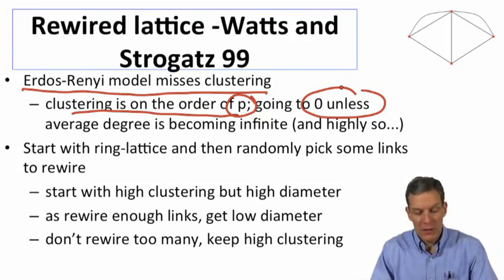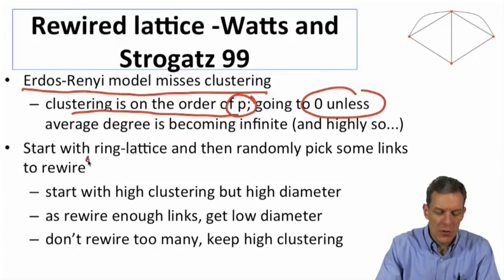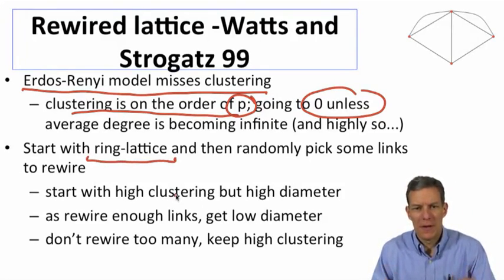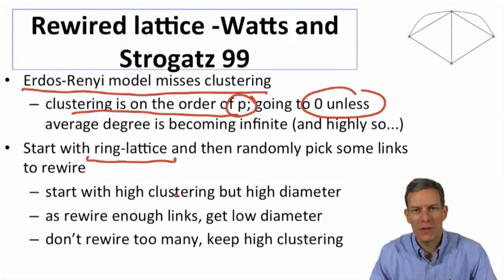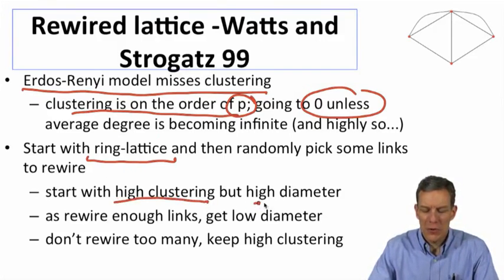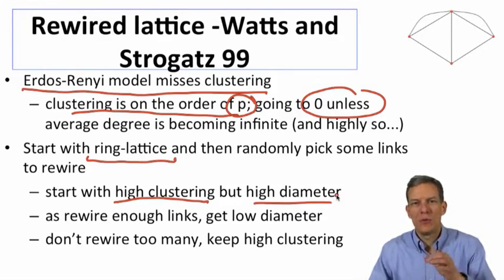Their idea had the following observation. They started with what's known as a ring lattice, a very particular structure of a network, and then randomly picked some links and rewired them. By starting with this lattice structure, you start with a network which had very high clustering but also has high diameter.